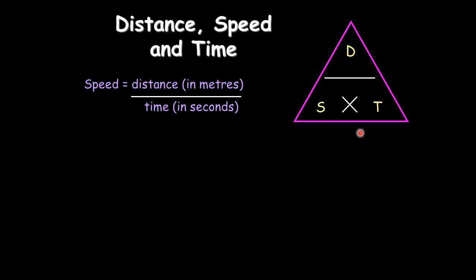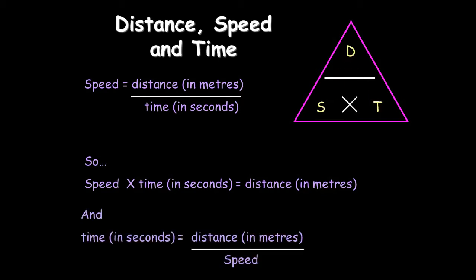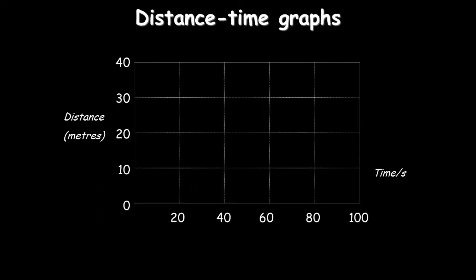Remembering the equation in a triangle will help you rearrange it. You have about eight equations — don't spend a lot of time learning them, but put them in triangles and rearrange them. If you cover over S for speed, you're left with D divided by T. Distance is speed times time, and if you cover over T, you get D divided by S, which is distance divided by speed.